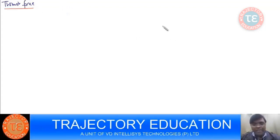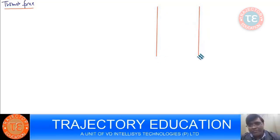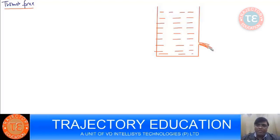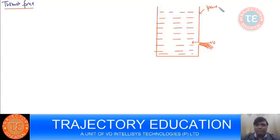Many times a fluid system also behaves like a variable mass system. When fluid is coming out, the mass of the fluid system is falling. For example, here we have an orifice, and when water comes out, it is ejecting with velocity V. So the parent body here is the water vessel, and this is the ejected mass.